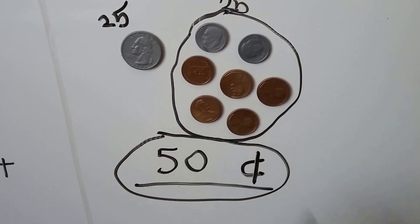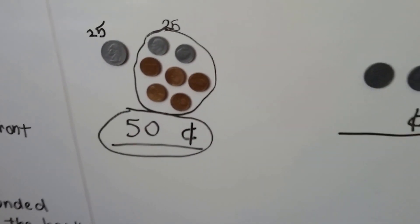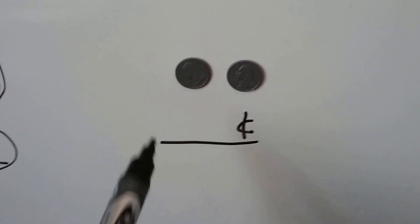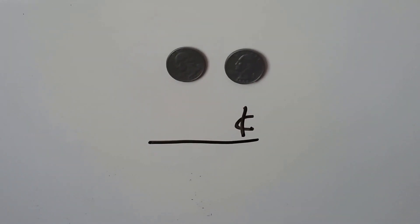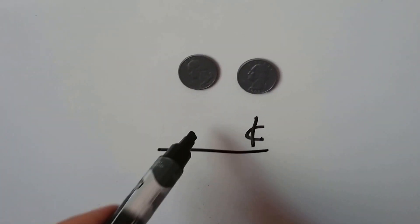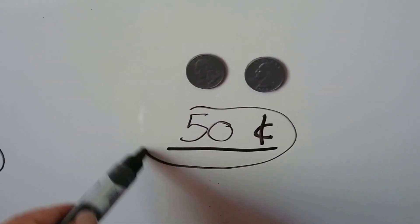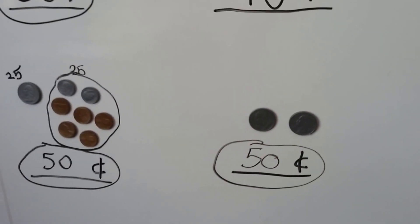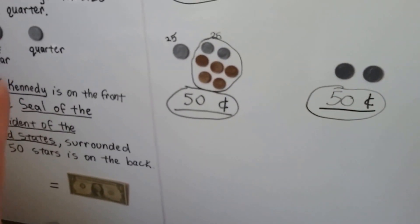One quarter, two dimes, and five pennies is 50 cents — that's enough to buy the juice. Now look at this one: we have two quarters. Skip counting by 25s: 25, 50. That's enough to buy the juice! Two quarters makes 50 cents — it's the same thing as a half dollar.